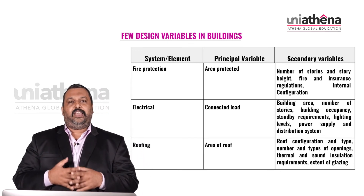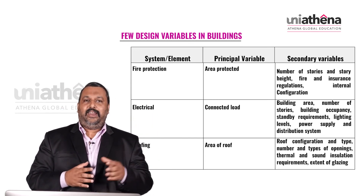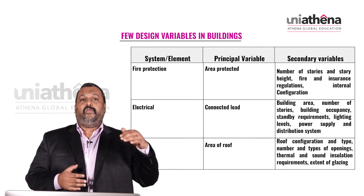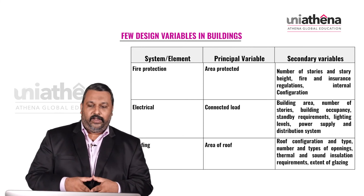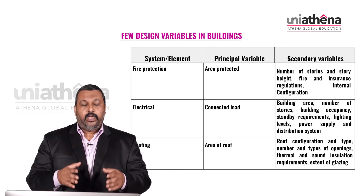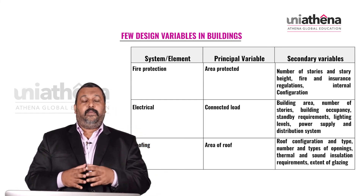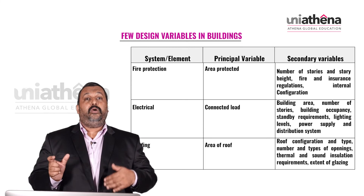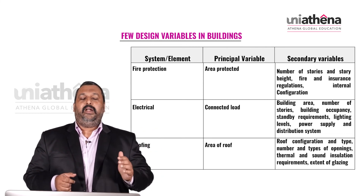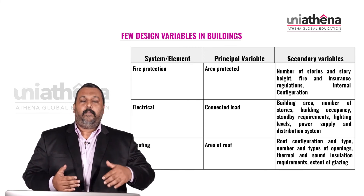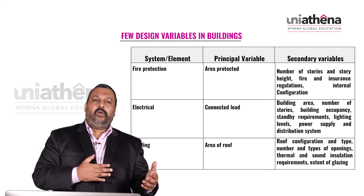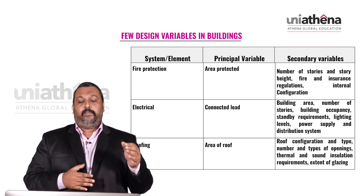For fire protection, the principal variable is the area to be protected. Secondary variables are number of stories, story height, fire and insurance regulations, and internal configurations. For electrical as a system, the principal variable is the connected load required for the building. Secondary variables are building area, number of stories, building occupancy, standby requirements, lighting levels, and power supply and distribution system.